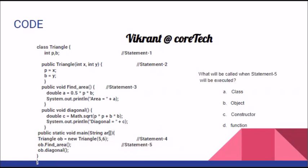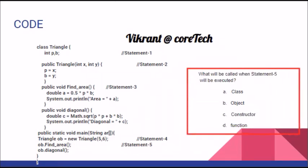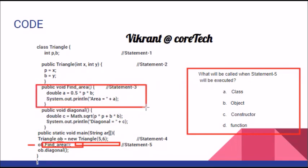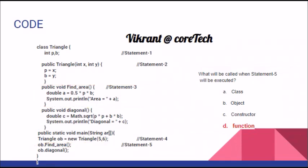Now the last question, since we have only five sub-parts in these program-based questions. What will be called when statement five is executed? Statement five makes use of two words: object ob followed by a dot and then findArea. So ob is the name of the object, and findArea is a void function. The options — class, object, constructor — are all wrong. The correct answer is function.